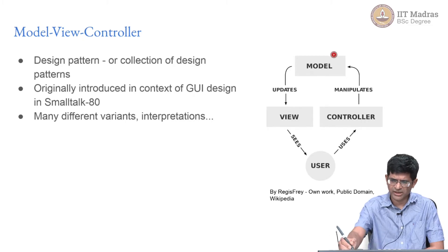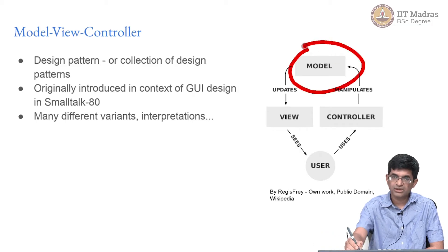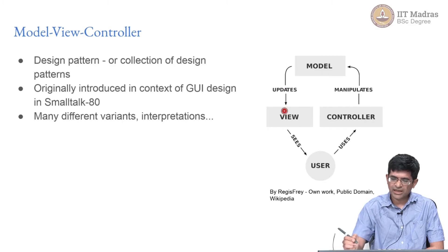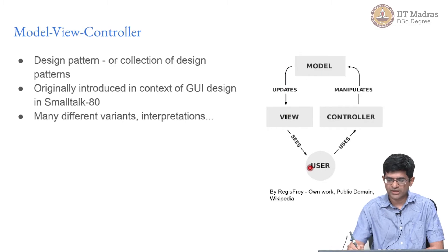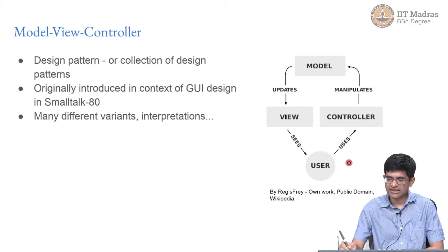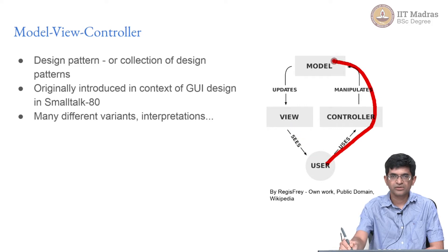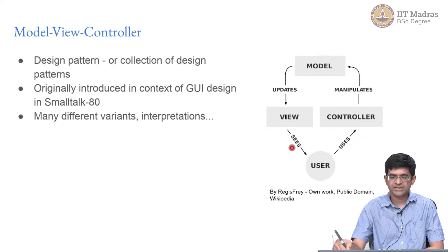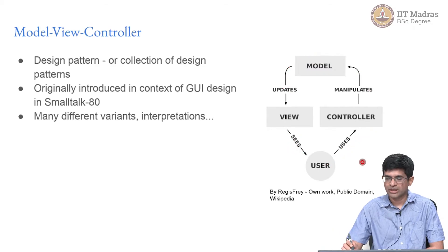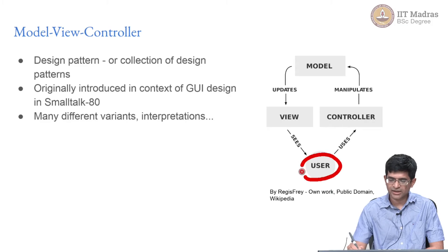This is what the Wikipedia page for MVC has as a picture. You have the model, and the model basically updates the view, which is what the user sees. The user might want to change the view — to look at something else — but they cannot directly go back and change the view. They need to use a controller, which will either request data or manipulate the model in some ways and get back to you with a view. All of this is completely centered around the user and is about user interface design.